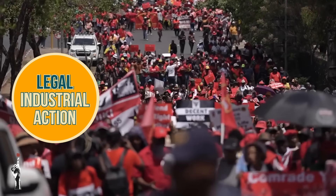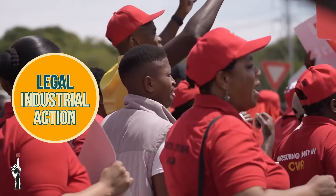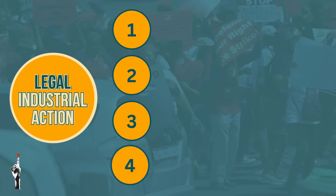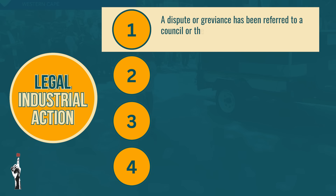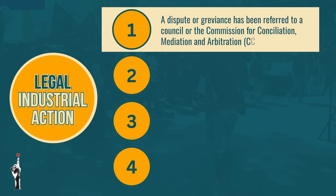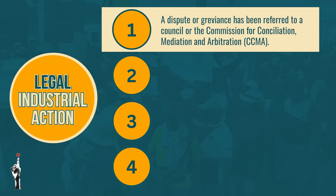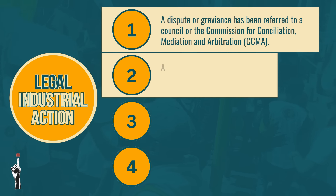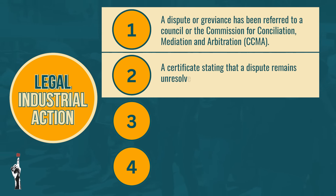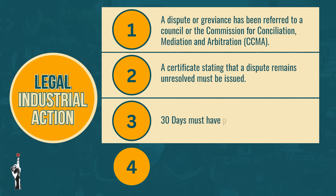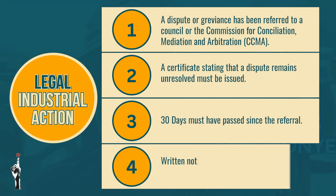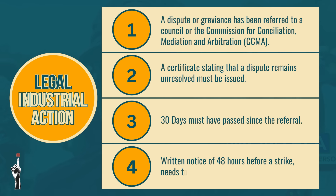A legal strike or industrial action is when the following steps have been taken. First, a dispute or grievance has been referred to a council or the Commission for Conciliation, Mediation and Arbitration — also known as the CCMA. Secondly, a certificate stating that a dispute remains unresolved must be issued. And thirdly, 30 days must have passed since the referral, and 48 hours written notice of a strike is given to the employer.